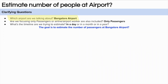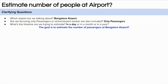Let's assume that the airport we are going to calculate for is Bangalore airport. The second question we can ask is about the people — are we considering all staff workers at the airport or only the passengers? Because at the airport there are airline workers, staff workers, airport maintenance staff, security staff, and vendors. Let's assume that in this question we are only thinking about the passengers.